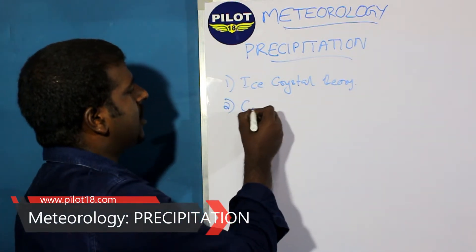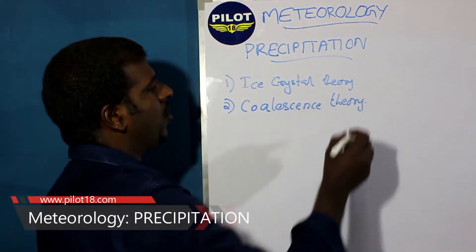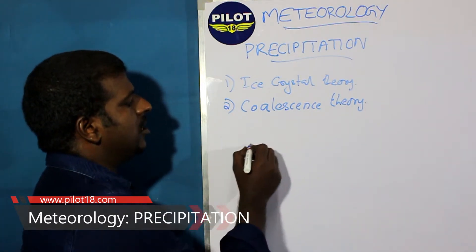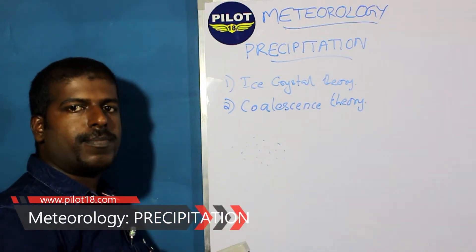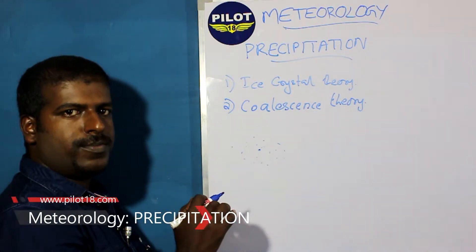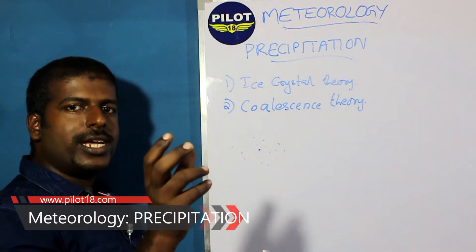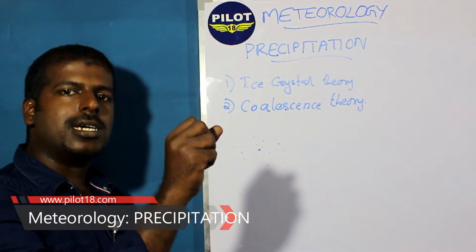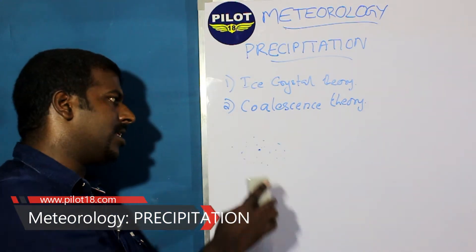For warm regions we have the coalescence theory. A cloud contains numerous tiny cold water droplets. When one droplet hits another, they merge into a larger drop. This happens all over the cloud — small droplets collide to become larger drops. As they grow larger they become heavier, can no longer be held in the cloud, and fall out as rain. This is the coalescence theory.